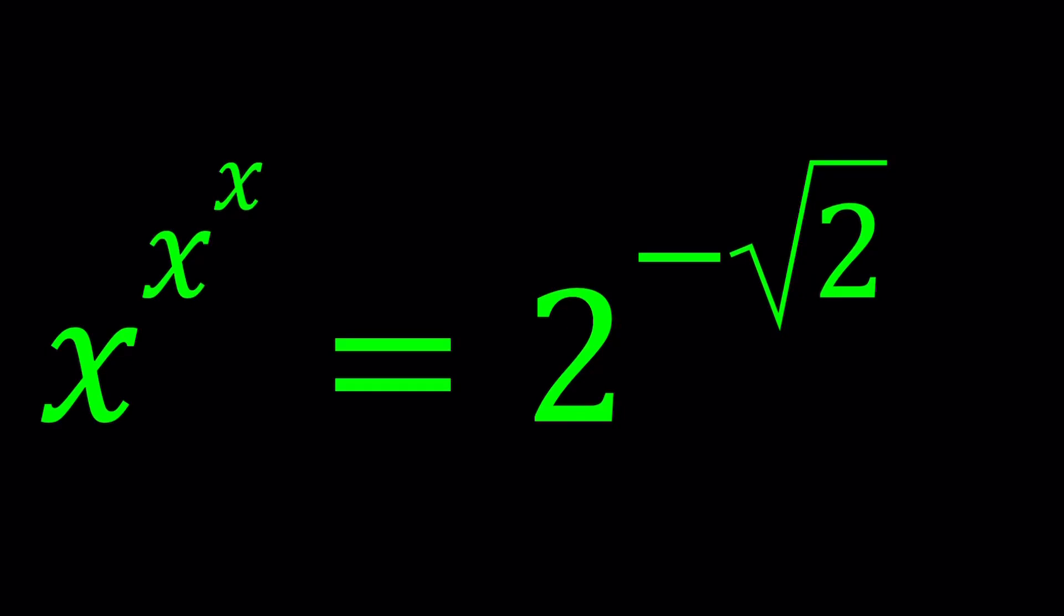Hello everyone, in this video we're going to be solving an exponential equation, a very exponential equation, kind of like a tower, but not an infinite tower. We have x to the power x to the power x equals 2 to the power negative root 2.